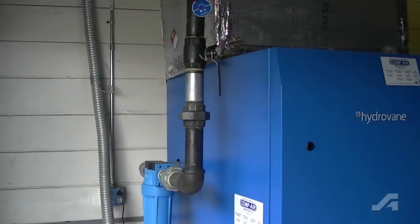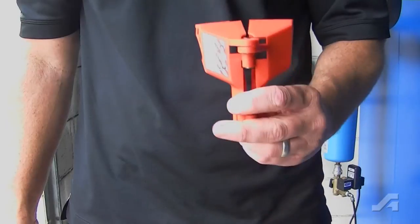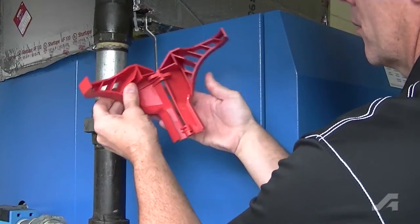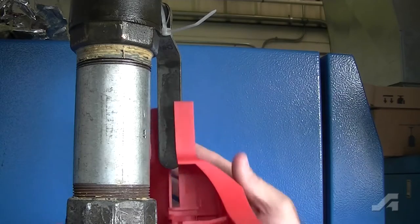Lockout ball valves with the Stopout Ball Valve Lockout. Available in two different sizes, this lockout device stops valves from being turned with its unique gullwing design.